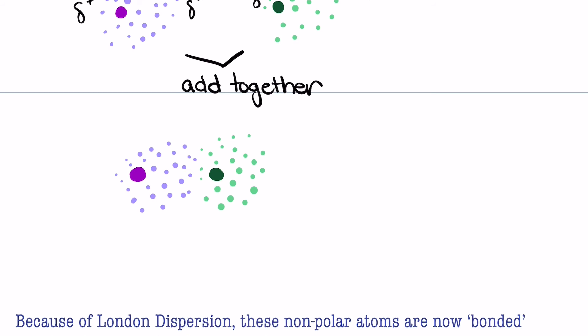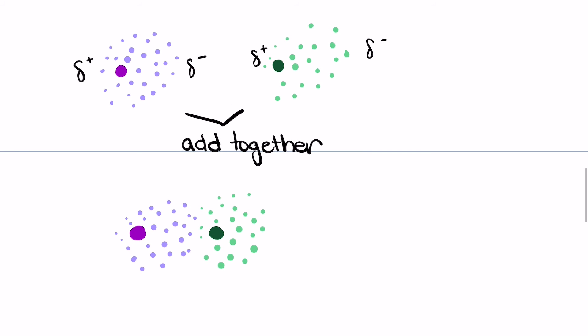Again, electrons are constantly moving. This bond, quote-unquote, only happens because the electrons are moving and leaving some sides electropositive and some electronegative.